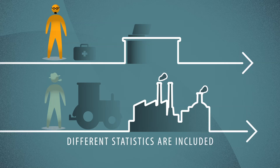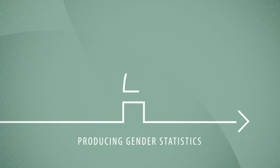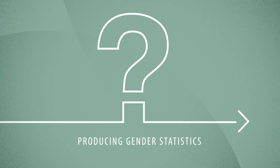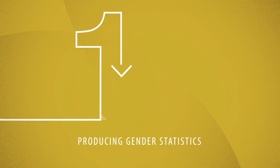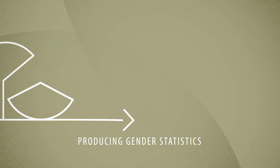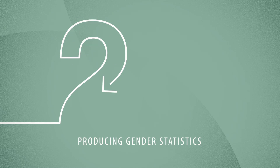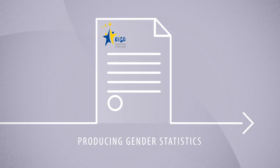They explore the differences that exist between women and men in many areas of society. How are gender statistics created? There are two important stages in creating gender statistics. First, we disaggregate, meaning we divide, the available data by sex. The second stage is to introduce a gender perspective to new data, applying gender-sensitive methods to all statistical activities to disclose specific gender inequalities.